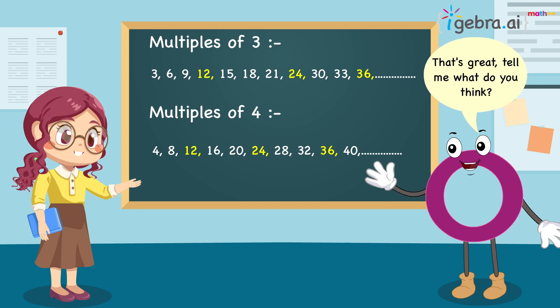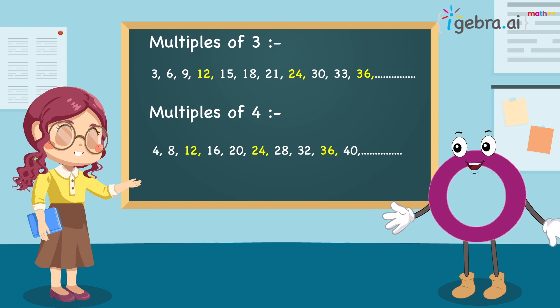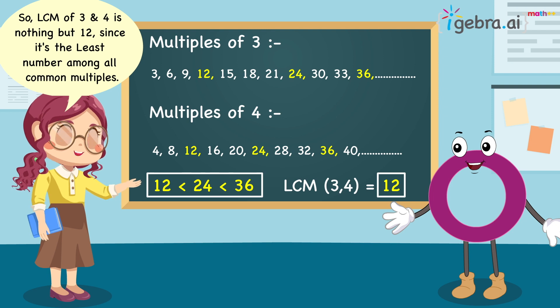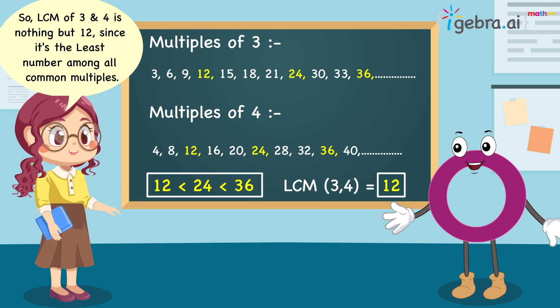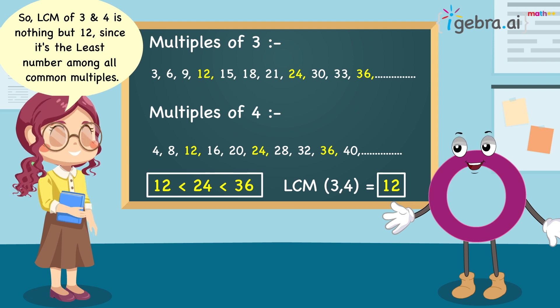That's great. Tell me what do you think? So, LCM of 3 and 4 is nothing but 12 since it's the least number among all common multiples.